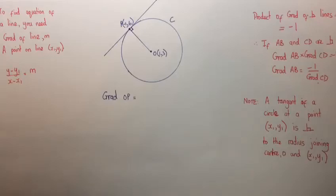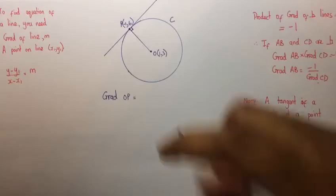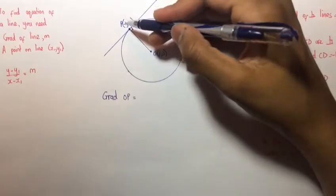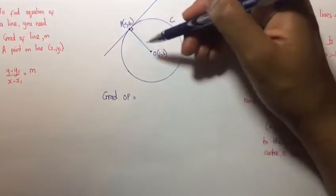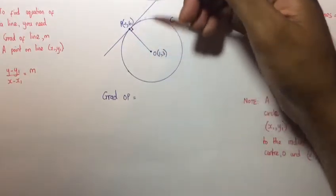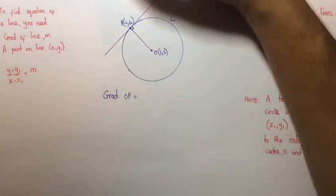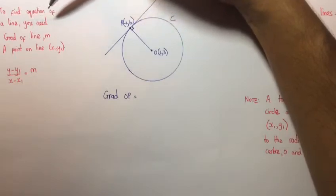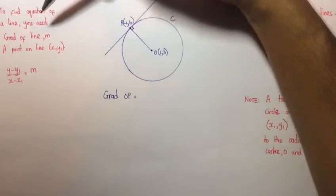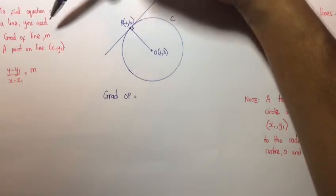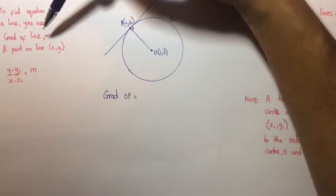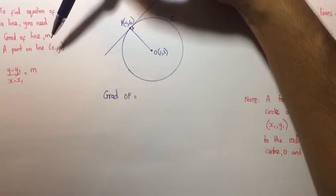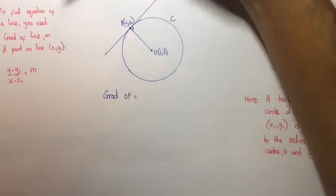Here, we are required to find the equation of the tangent to C at the point P equals (-1, 6). Before we begin, we must first remember that in order to find the equation of any line, you need two things: the gradient of the line and a point that lies on the line.